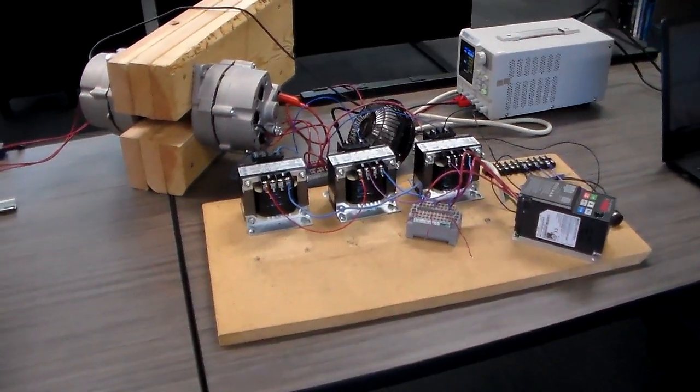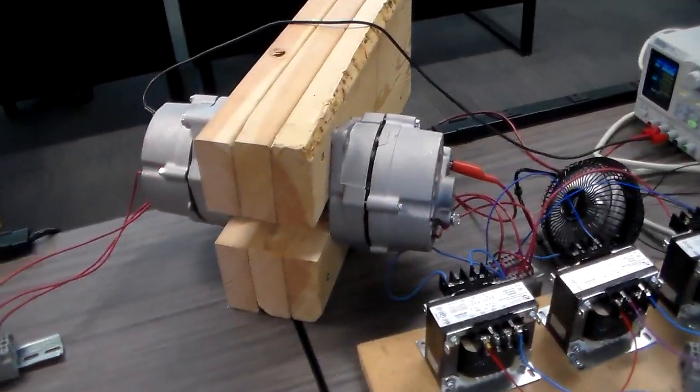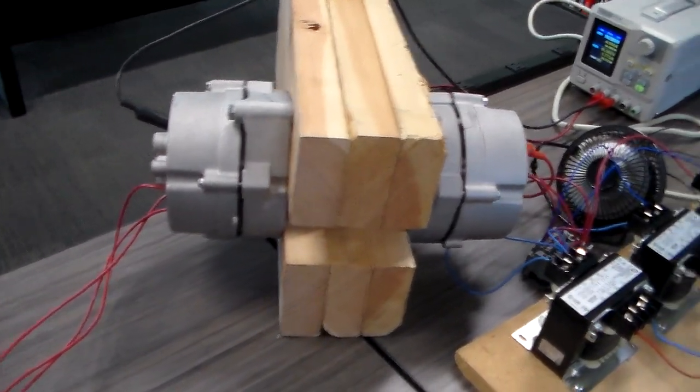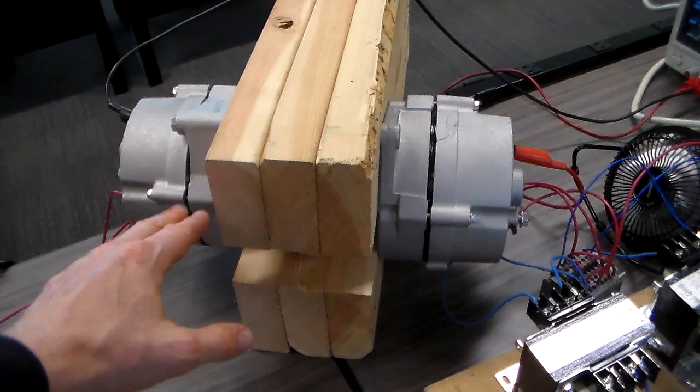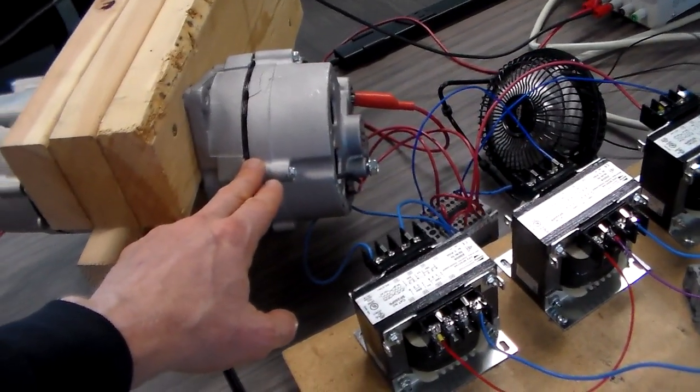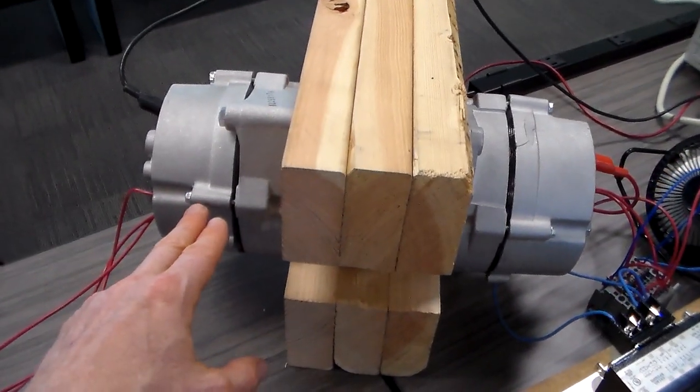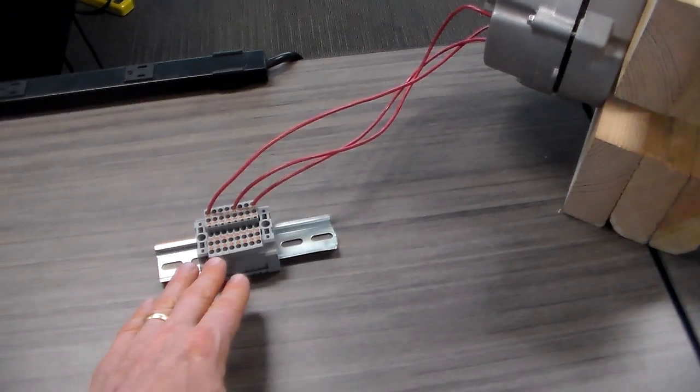This is the next stage in our prototyping of an AC motor generator unit. We are taking two Delco Model 10 DN alternators, running one as an electric motor and running the other as a generator to produce three-phase AC output.